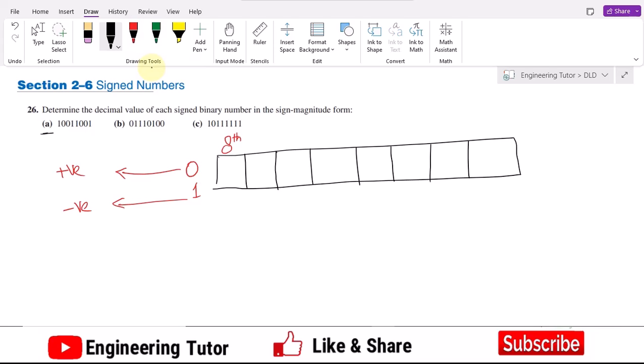So the first number here is part a and that is 1 0 0 1 0 0 1 0 and 1.